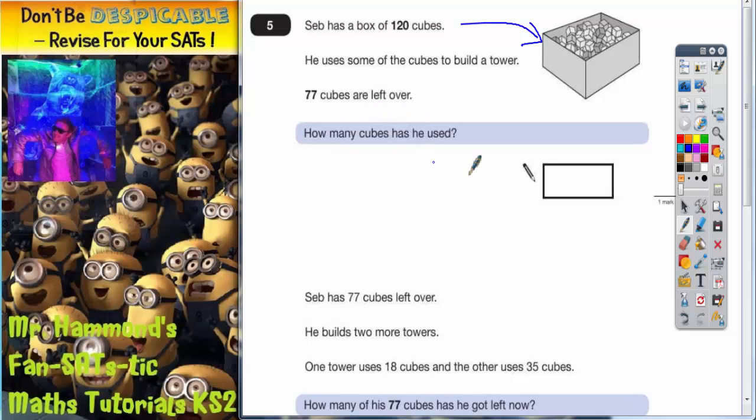How many cubes has he used? Well, if we just subtract the 77 off of 120, which is just going to be a quick column method, we will know how many is used.